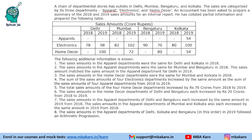An accountant has been asked to prepare a summary of the 2018 and 2019 sales amounts for an internal report. We are given some of the data, some data is missing, and we are given additional information to fill the remaining data and answer the questions. For the electronics department, the entire data is available. We have home decor and apparels with missing data. Eight statements are given to us and we need to fill in the data.